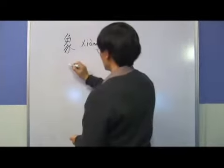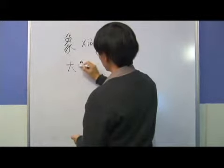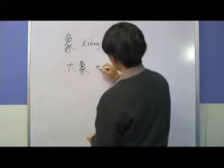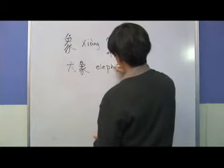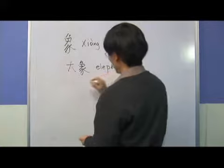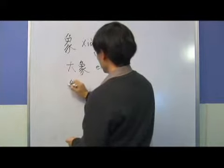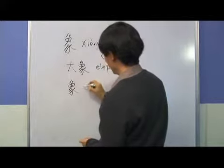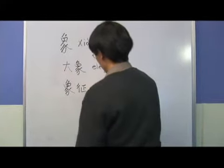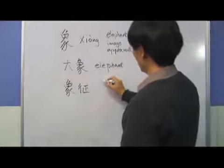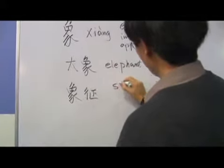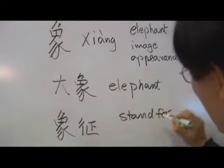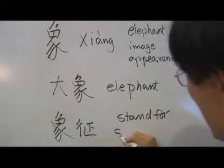So xiang — 大象 (dà xiàng) is one example, that means elephant. And 象征 (xiàng zhēng) means to stand for, and symbolize.